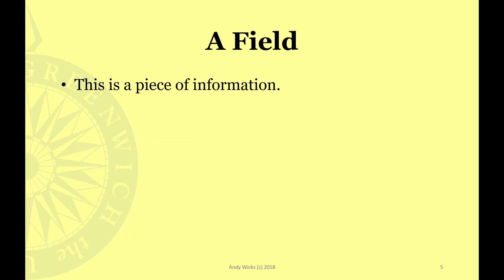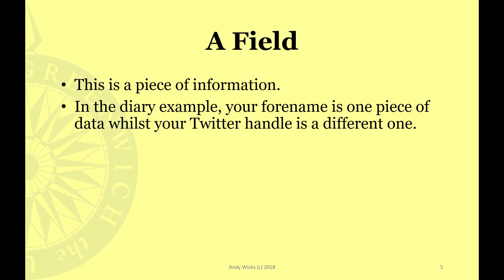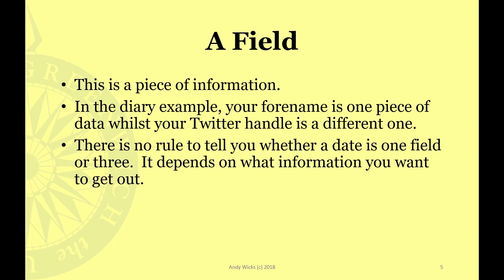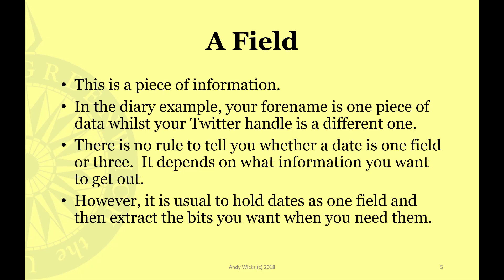A field is a piece of information. In the diary example, your forename is one piece of data, whilst your Twitter handle would be a different one. There's no rule to tell you whether a date is one field or three — it depends on what information you want out. The same holds true with address, although with address it's usual to keep all the data bits in separate fields. With a date, it's usual to hold it in one field and then extract the bits you want as you need them.